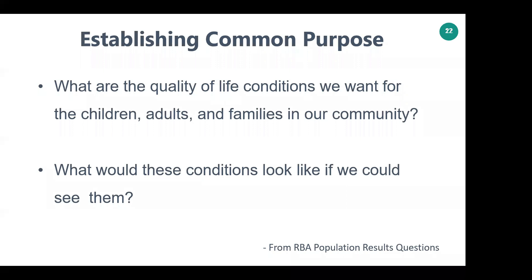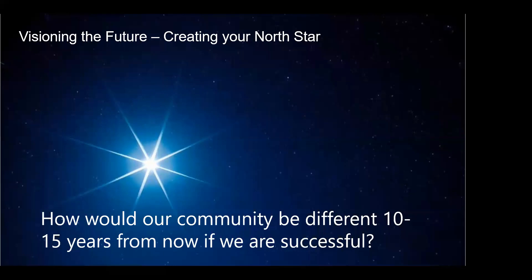RBA and Mark Friedman's seven questions can help us do that. The first question is: what are the quality of life conditions we want for children, adults, and families in our community, and what would these conditions look like if we could see them? When I work with communities, I often ask everyone to close their eyes and imagine — if our collective impact effort is successful, how would our community be different 10 to 15 years from now? People say things like: we see kids playing in parks, more people employed, better housing. And what becomes clear is those outcomes can only occur if the community and its residents are involved in that effort.